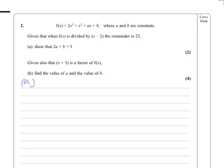We chuck x equals 2 in, and we should get 25. x equals 2 into this and we should get 25. So we get 2 times 2 cubed, add 2 squared, add ax, add b, equals 25.